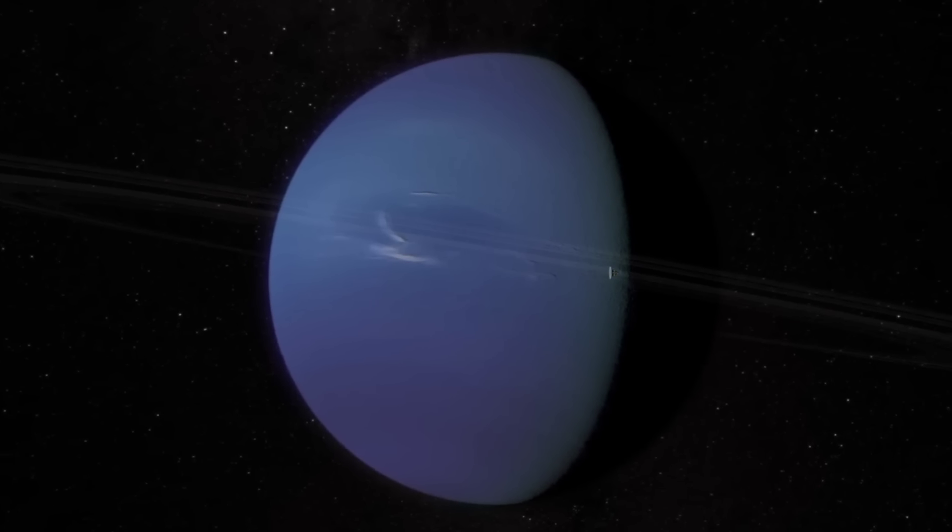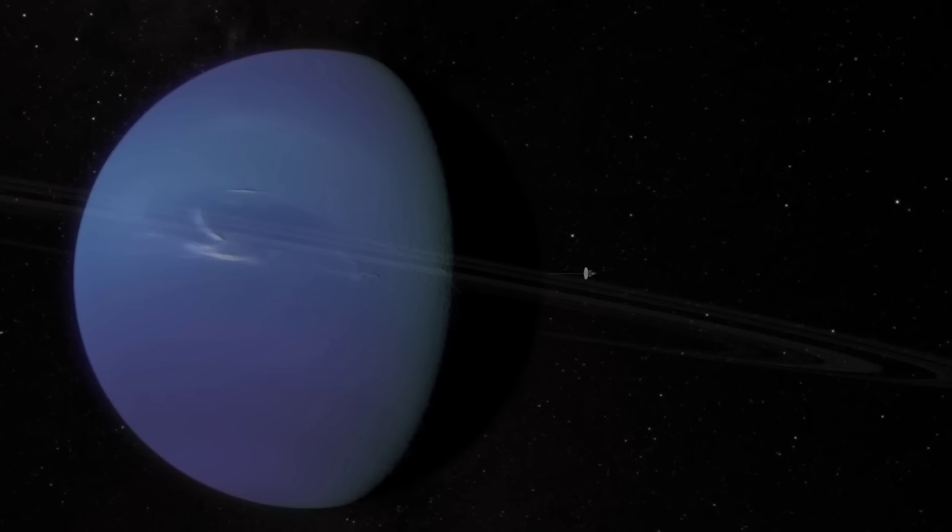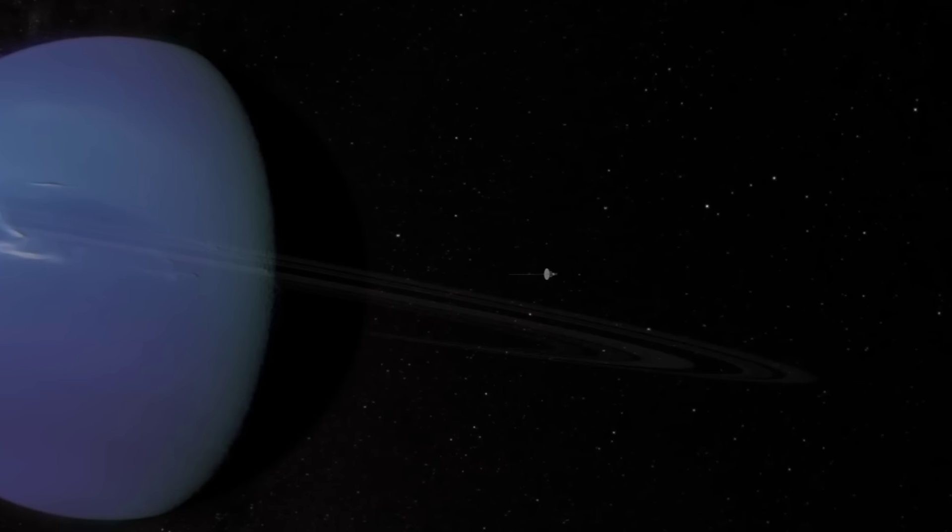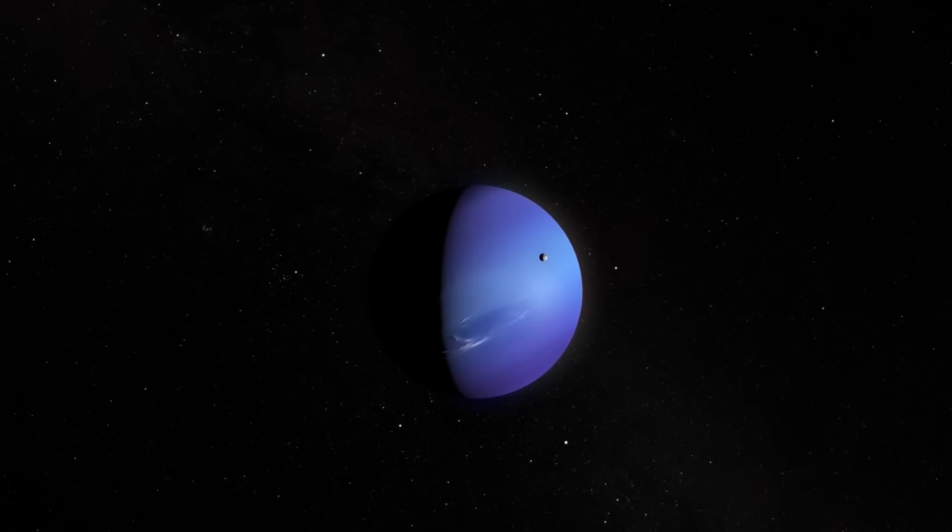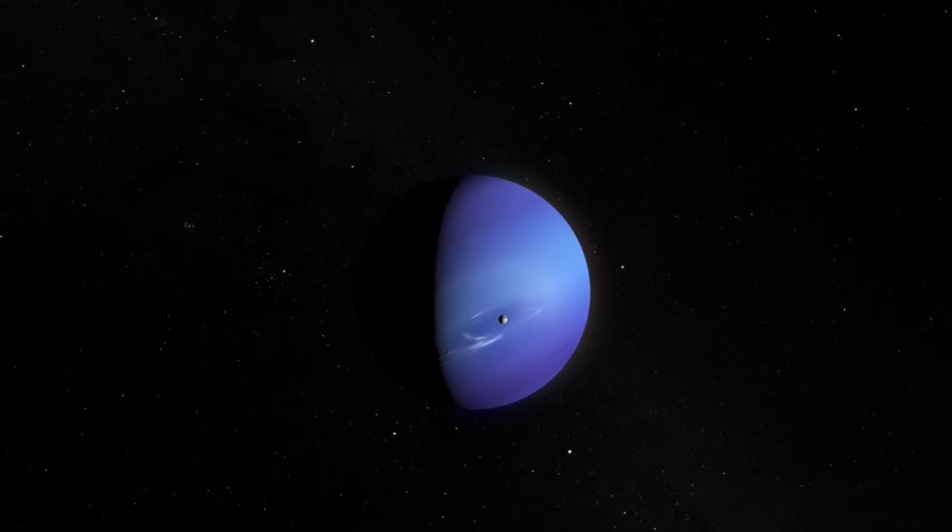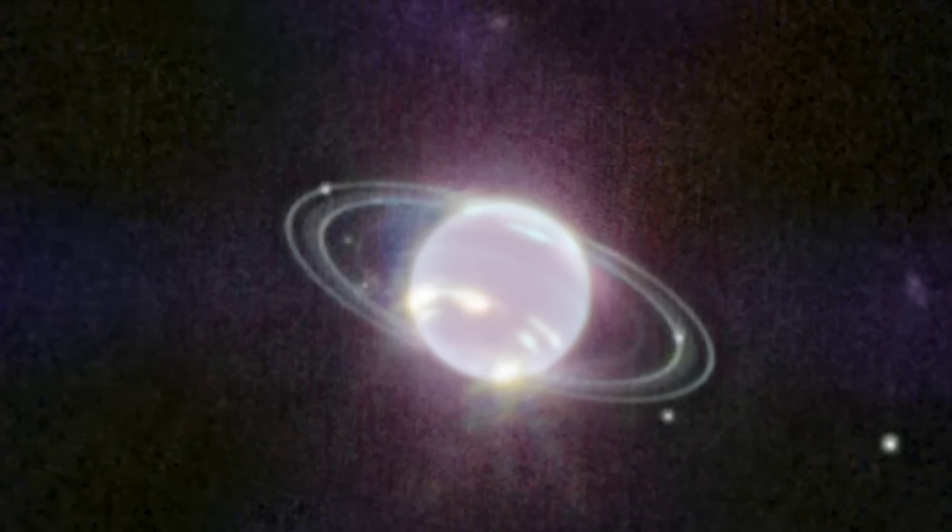This planet is characterized as an ice giant due to the chemical makeup of its interior. Compared to the gas giants Jupiter and Saturn, Neptune is much richer in elements heavier than hydrogen and helium. This is readily apparent in Neptune's signature blue appearance in Hubble space telescope images at visible wavelengths caused by small amounts of gaseous methane.